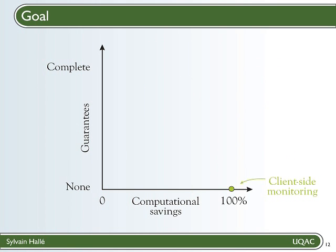In the same way, if we want to put a dot for server-side monitoring, we have the opposite: complete guarantees for the server, but at the price of doing all the work, so top left corner. We can imagine various intermediate solutions between these two extremes where you have maybe less guarantees but for a bit less work. In cooperative runtime monitoring, we want to achieve a compromise between these two extremes, but this depends on the shape of the graph between server- and client-side monitoring.